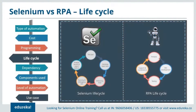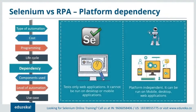What about their lifecycle? The lifecycle of Selenium is a little more complicated compared to RPA. Selenium deals with test planning, generating basic test cases, enhancing the cases, running and debugging the tests, and analyzing and reporting defects. Whereas RPA deals with just four processes: analysis, development, testing, and support and maintenance. On platform dependency: Selenium can be run on different browsers but can test only web applications — no mobile or desktop applications. Whereas RPA can run on any platform, be it web, mobile, or desktop applications.